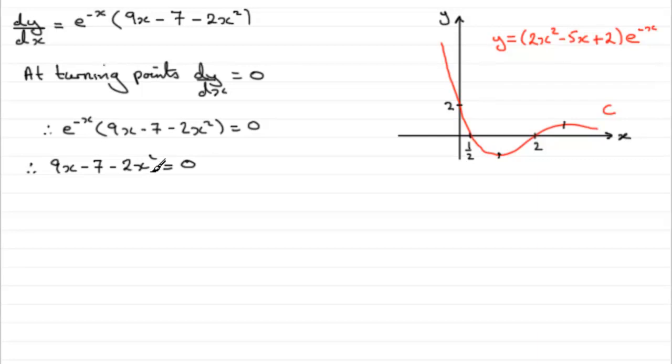So for a quadratic equation like this, I'd want to rearrange it, make the x² term positive. So I'm going to multiply both sides by minus 1 and that's going to give me 2x², put the x term next, but it will be minus 9x and then the constant which will now be plus 7, and that equals zero.